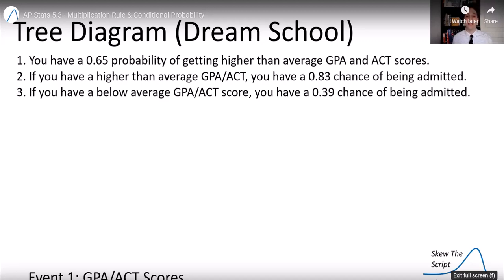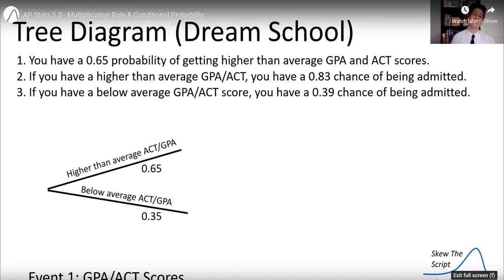So event one is, let's see, in high school, what GPA or ACT score you would get. There are two options. You can get above average or below average. And we can fill in the probabilities. Probability of having above average GPA and ACT was 65%. So probability of having below average is the rest of that probability or 35%. You just do one minus that.